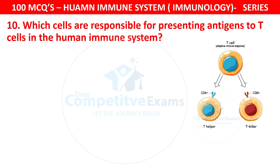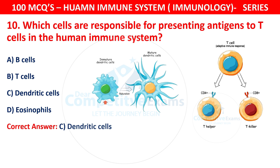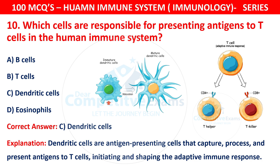Question 10. Which cells are responsible for presenting antigens to T cells in the human immune system? Your options are B cells, T cells, dendritic cells, or eosinophils. The correct answer is C — dendritic cells. Dendritic cells are antigen-presenting cells that capture, process, and present antigens to T cells, initiating and shaping the adaptive immune response.